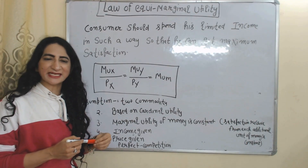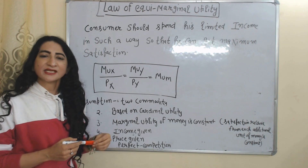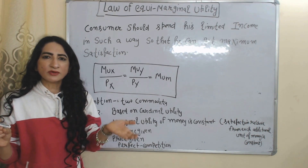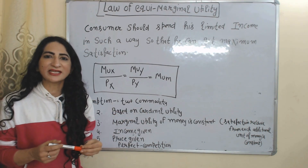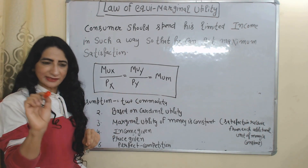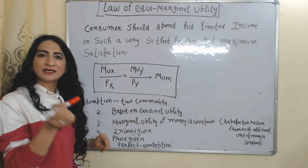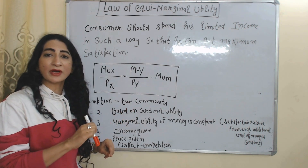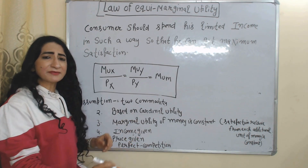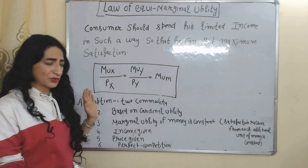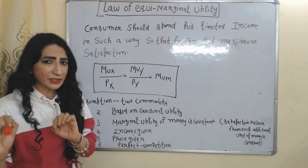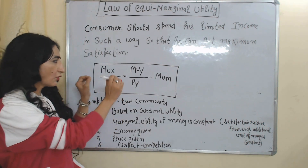Hello everyone, my name is Vinny Sethi. Today we are going to talk about the Law of Equimarginal Utility. According to this law, a consumer should spend his limited income in such a way that he can receive maximum satisfaction. Here we assume we have only two commodities X and Y, based on cardinal utility — meaning we measure utility in terms of cardinal numbers like 1, 2, 3, 4. The marginal utility of money is constant, prices are given, income is given, and there is perfect competition.